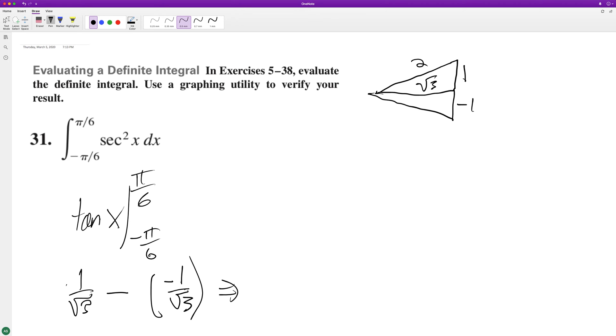So essentially we get one root three plus one over root three, which gives us two root three. But usually they want to rationalize the denominator, so you multiply by root three over root three.